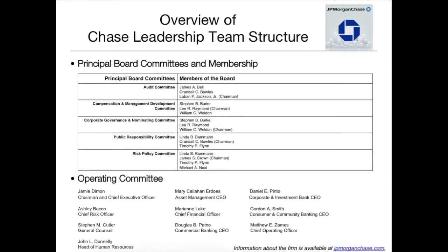First of all, let's take a look at what the Chase leadership team structure looks like. It's basically divided into two parts: the first one being the board committees and members, and the other one is the operating committee, which is more known as the C-suite.